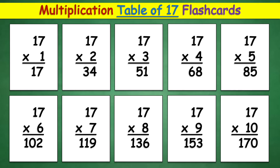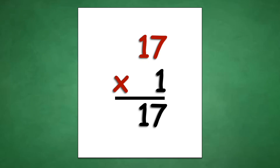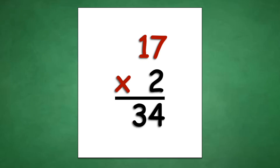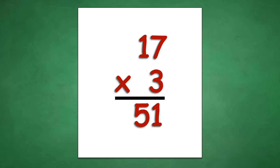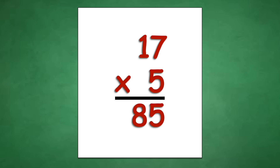Table of 17: 17 times 1 equals 17, 17 times 2 equals 34, 17 times 3 equals 51, 17 times 4 equals 68, 17 times 5 equals 85.